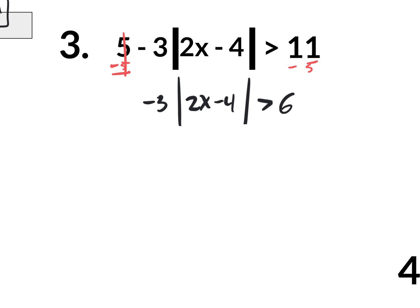That really means negative 3 times the absolute value. If you don't want that multiplication of negative 3, you get rid of it by dividing. The opposite of multiplying is dividing, so you divide by negative 3 on both sides. This is an inequality, and when you divide by a negative on an inequality, you flip the symbol. So what we're going to have here is the absolute value of 2x minus 4 is less than — instead of greater than, it becomes less than because we divided by a negative — is less than negative 2.